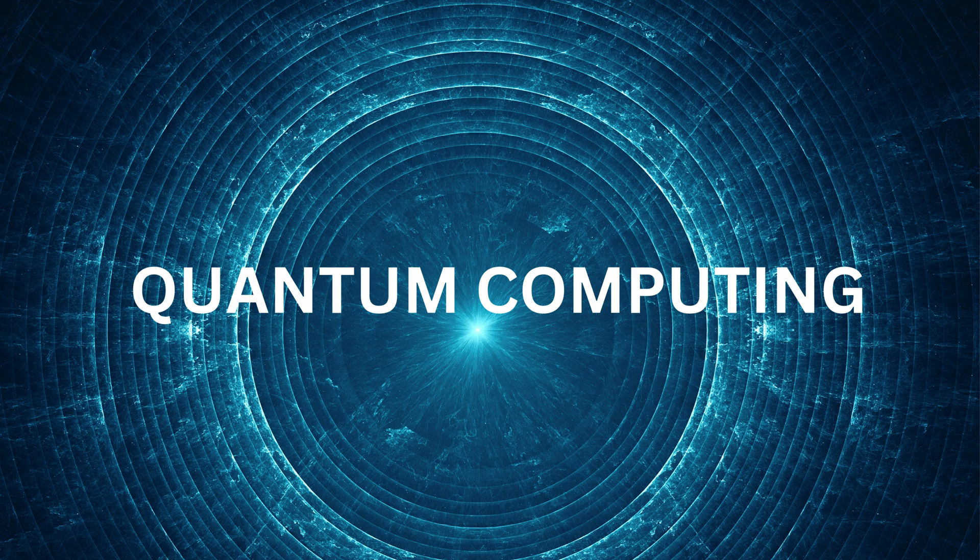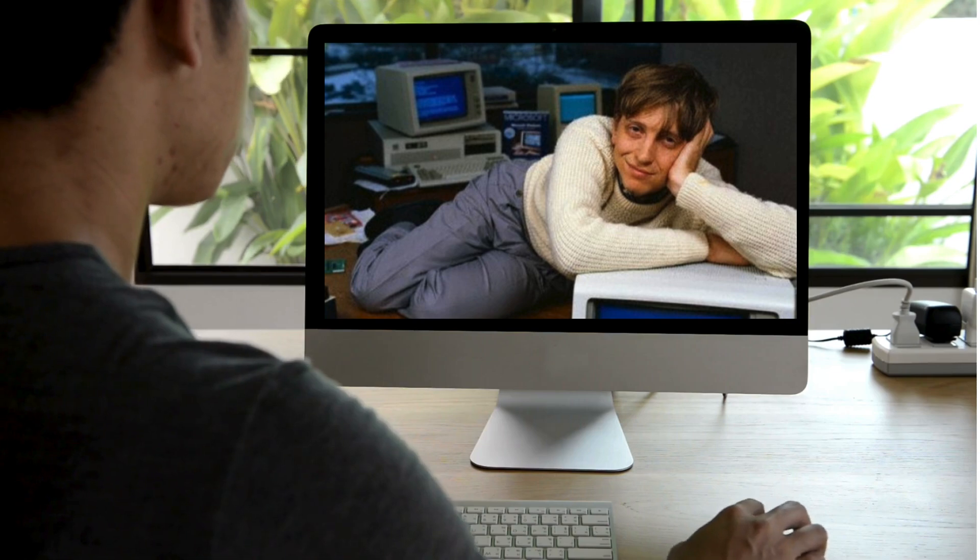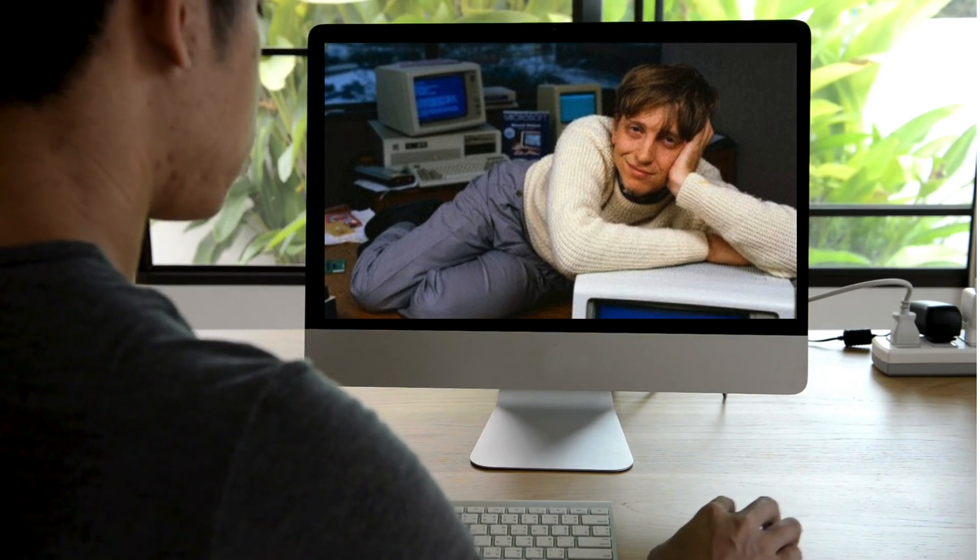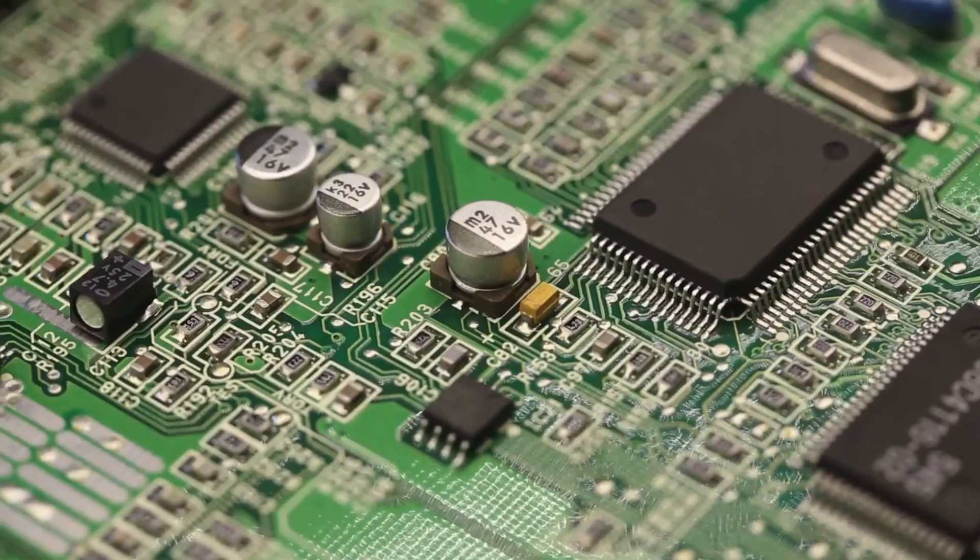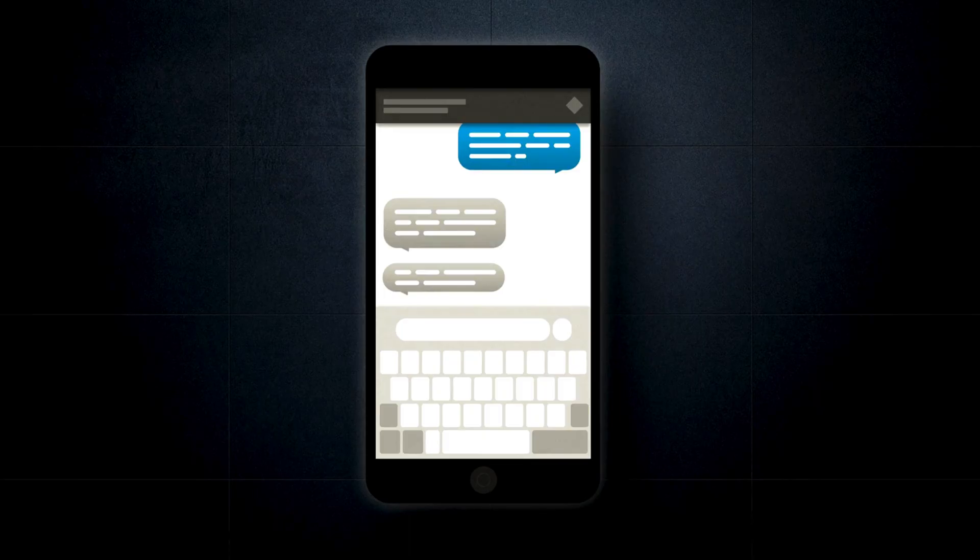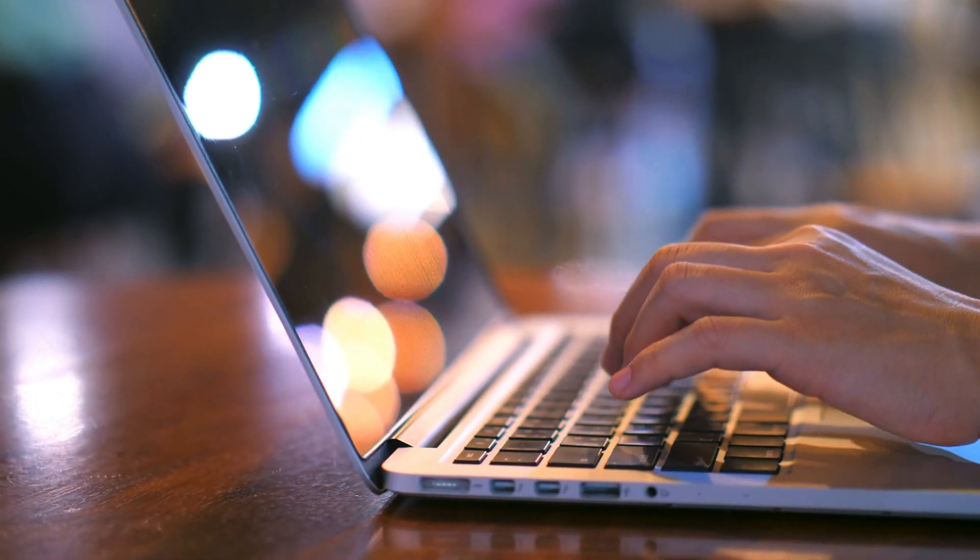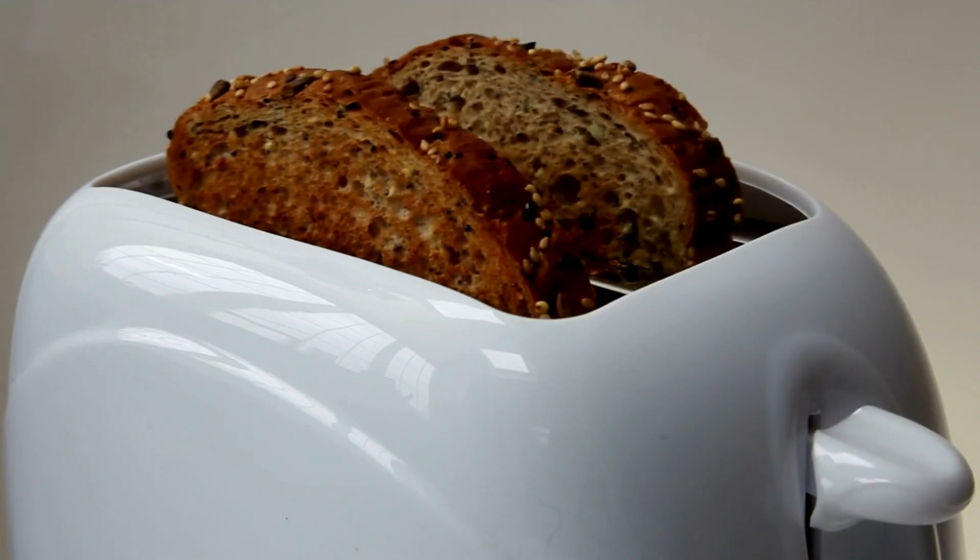First, let's focus on the second half of the word: computing. I assume you already know how regular computers work, but here's a quick recap. Everything in a regular computer boils down to bits, tiny switches that can be either on or off. In other words, one or zero. That's how your phone, laptop, or even your smart toaster process information.